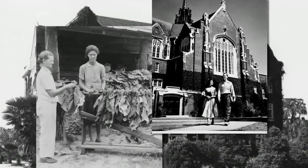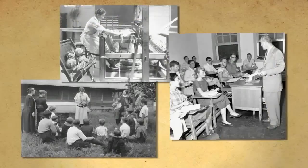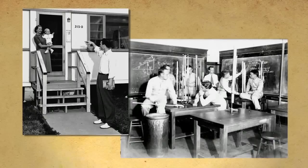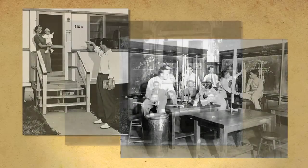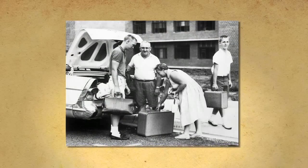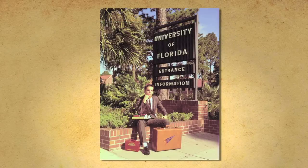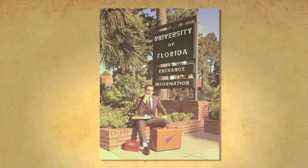The Morrill Act broadened our notion of who should attend college. Still, the percentage of college graduates in the total population remained relatively low. Enrollment at the University of Florida never exceeded 3,500 students prior to World War II. It wasn't until 1944, with the passage of the Servicemen's Readjustment Act, or as we know it the GI Bill, that the nation embraced the idea of mass higher education. The GI Bill and later the Pell Grant were the logical culmination of the Morrill Act. Each act further democratized higher education.